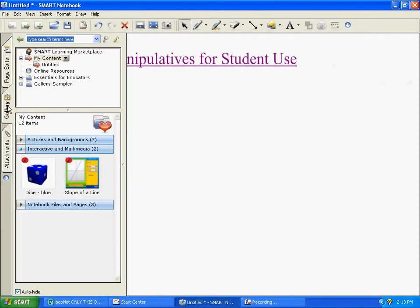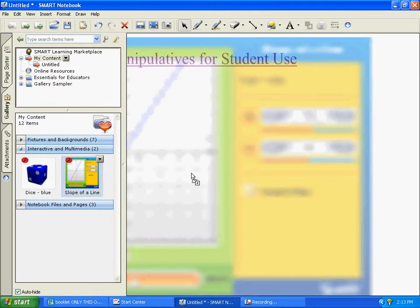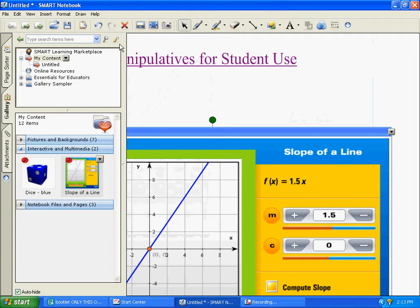We would go to our gallery and look for things, or we'd go to a website and look for things that we'd like to use. And here, already in the gallery, we have a manipulative.